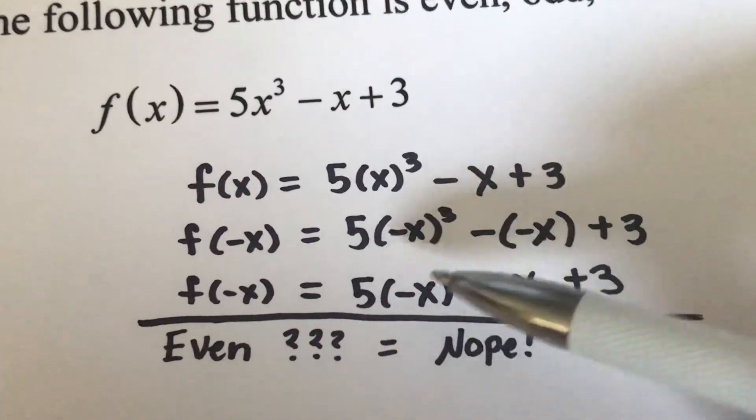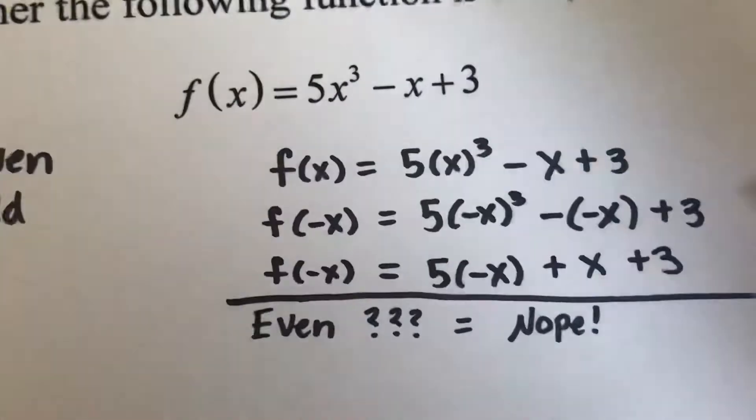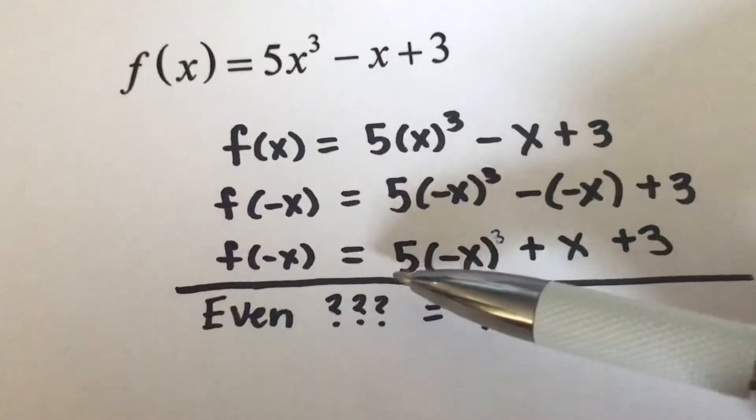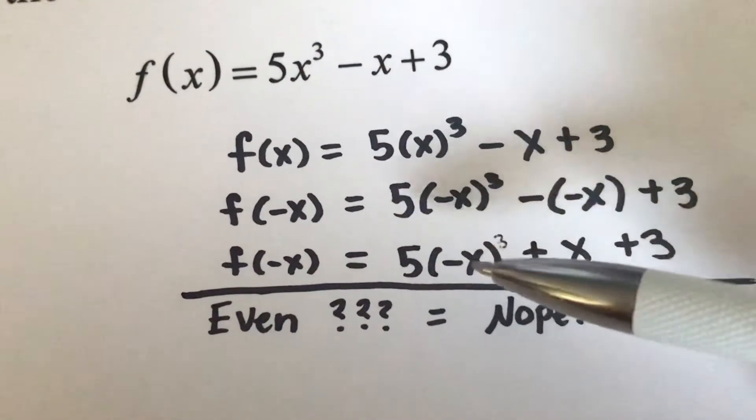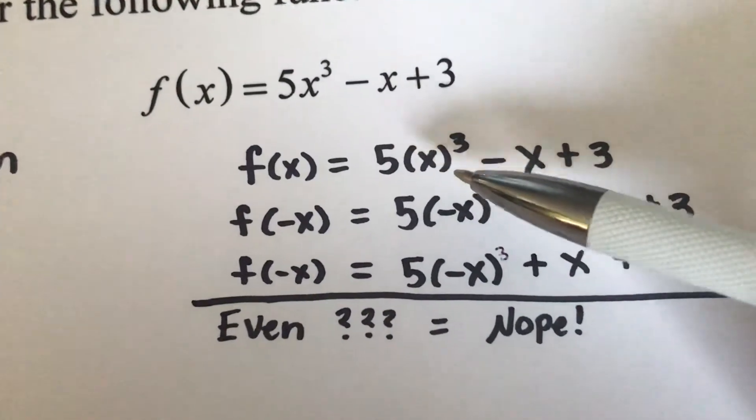And so negative x to the third is still going to be negative, right? Let me go ahead and draw a little three there. So therefore we've got 5 to the negative x, or negative 5x cubed, which already is different from what we've got up here in this equation.